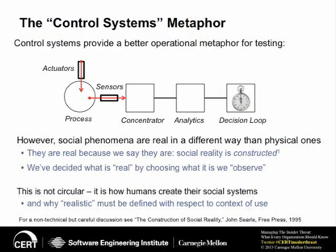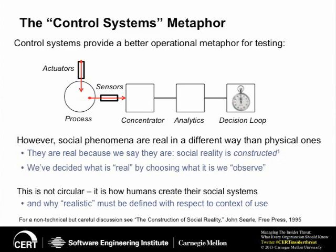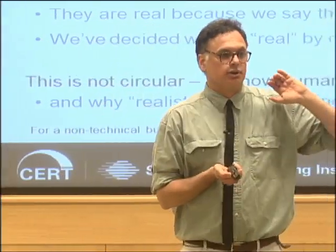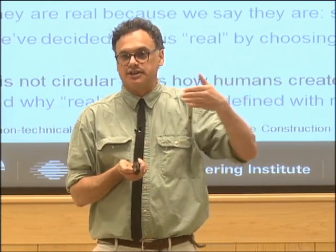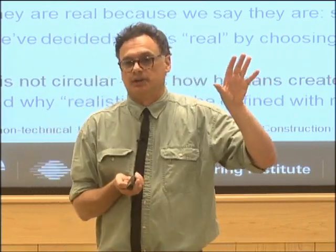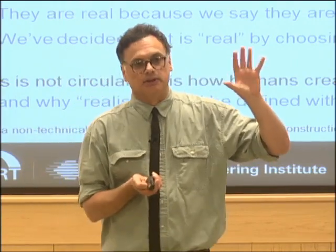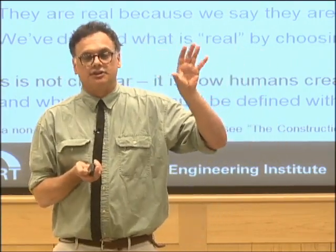A control system is one where there's a process of some kind running — some phenomenon of interest. We connect to those processes things called sensors and actuators. We can sense the state of the process through our sensors and influence the state through actuators. I'm not going to be referring to actuators in the remainder of the talk because that's not really what we're doing with detectors — we're just sensing. But in principle, actuators and sensors are the way control systems interact with the systems they're managing.